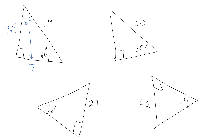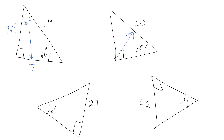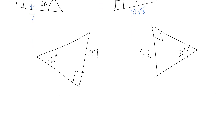You might be tempted to make it 10 and 10√3 for the first problem — but don't, because you weren't reading carefully. The hypotenuse opposite the right angle is 20, making the short side 10 (opposite the 30°), and the other leg is 10√3.